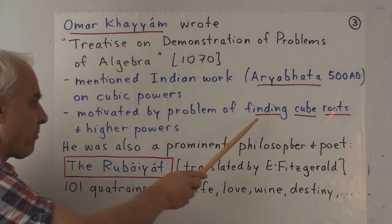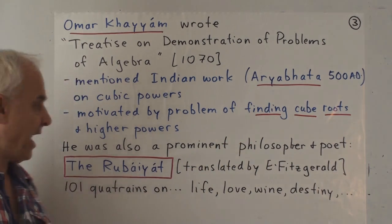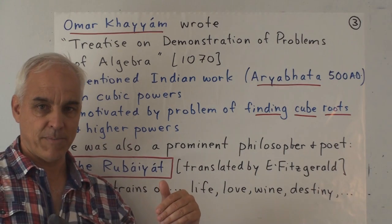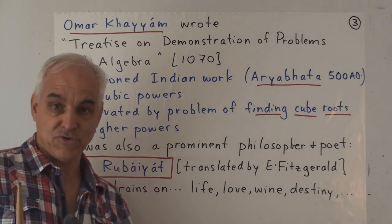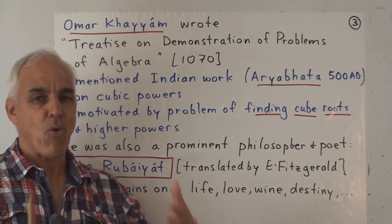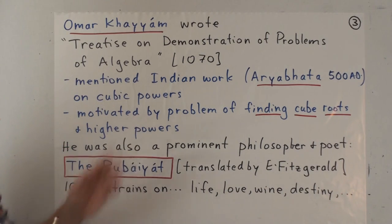He was actually motivated by a problem of finding cubed roots and finding higher n-th powers of a number. That was a kind of tricky problem that you need to understand the binomial theorem in order to attack that problem. So that was his main motivation.